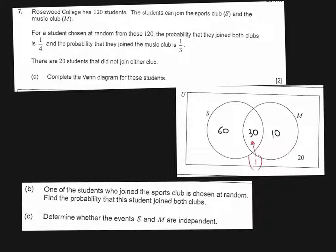Question 7 is all about probability and independence. We're given information about students who joined a sports club or a music club or neither. We know that there are 120 students and we are told that 20 students did not join either club.